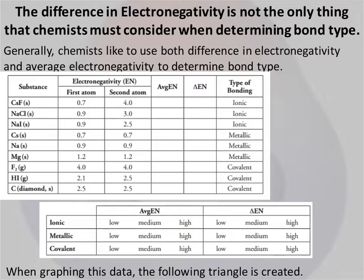The difference in electronegativity is not the only thing that chemists will consider when they determine bond type. They also will look at the average electronegativity of the two atoms, and then they'll also look at the difference in electronegativity between the two atoms. So if we look up here, we can kind of get some trends generally laid out.